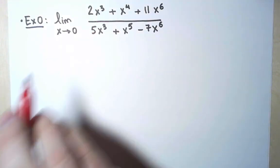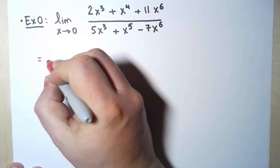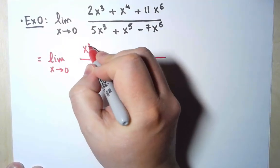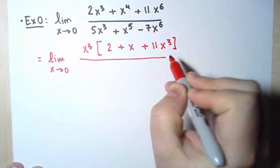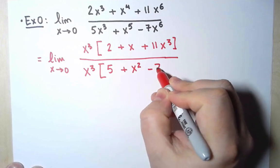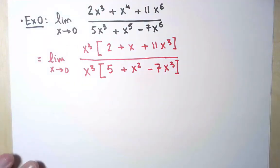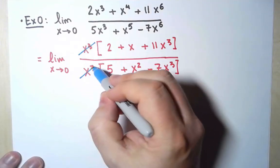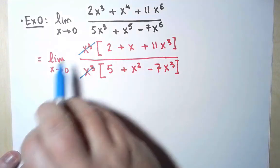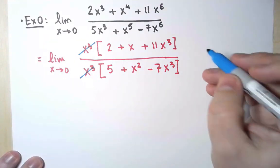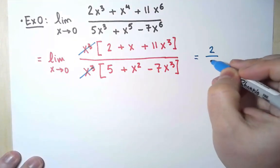But if I want to justify the steps, what we can do is factor out x³ both in the top and the bottom. And now I can cancel the x³, because it's the same on both, and I am left with a limit that I know how to compute. As x approaches 0, this is 2 over 5.